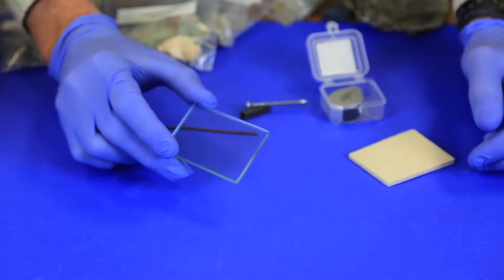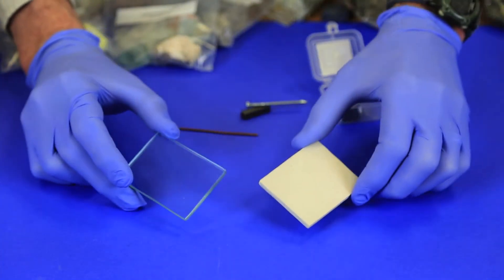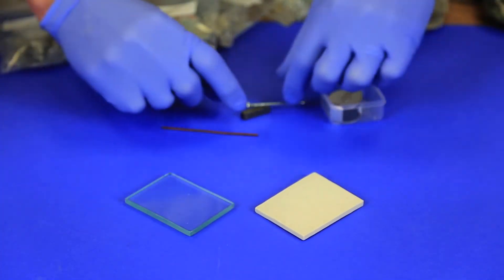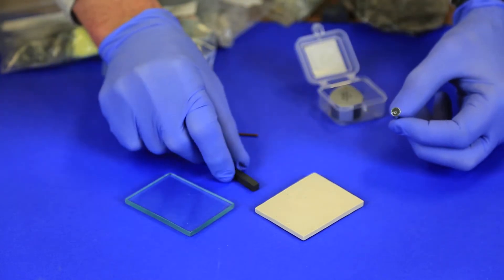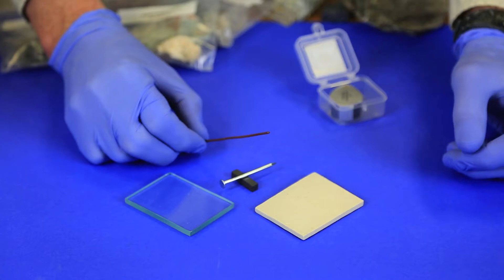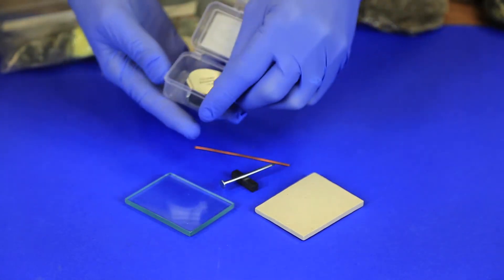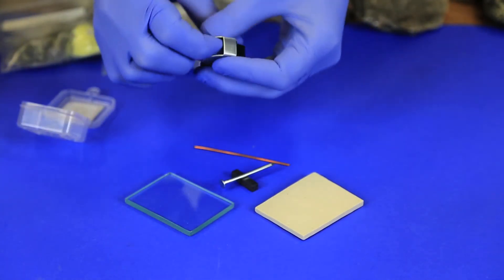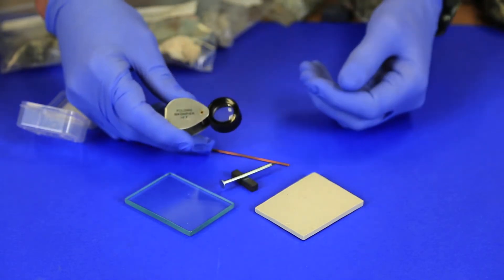Also in your kit are some testing tools, namely a glass plate, a streak plate, a magnet, an iron nail, a copper wire, and a folding magnifier, and we'll take a look at how to use each one of those as we go along.